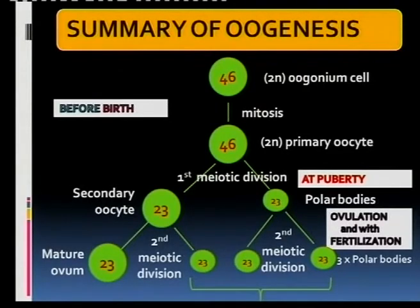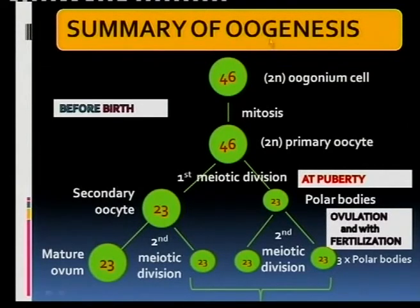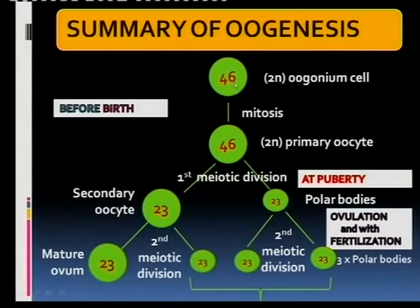Here is a summary. We start off with the oogonium cell, which is the stem cell, also called the germinal epithelium — many words for one thing. It contains 46 chromosomes, which is the diploid number.